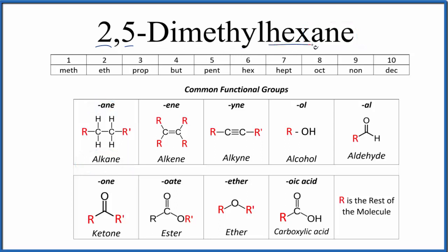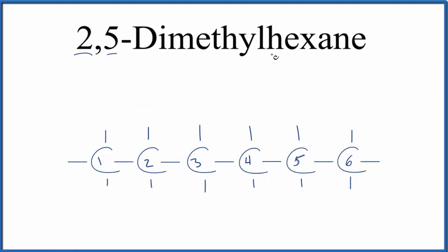Next we have hex. Hex, that means six. So we're going to have six carbon atoms. They'll be all single bonded. Let's draw that and label the atoms one through six. So right now we have just hexane, six carbons, and the lines, they go to hydrogen atoms. You'll note that each carbon has four bonds.